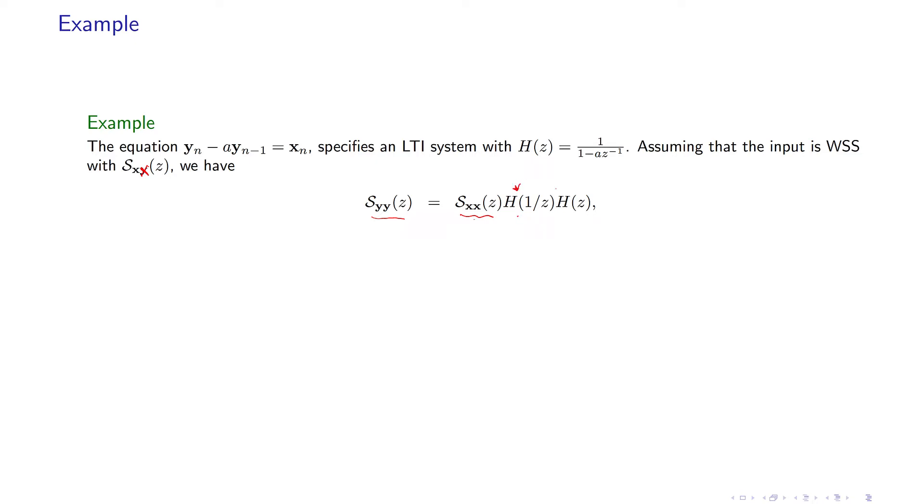So remember that if coefficient a is complex, you have to put a conjugate, two conjugates here. If a is real, you don't need to put this one. So these are needed if a is a complex number.